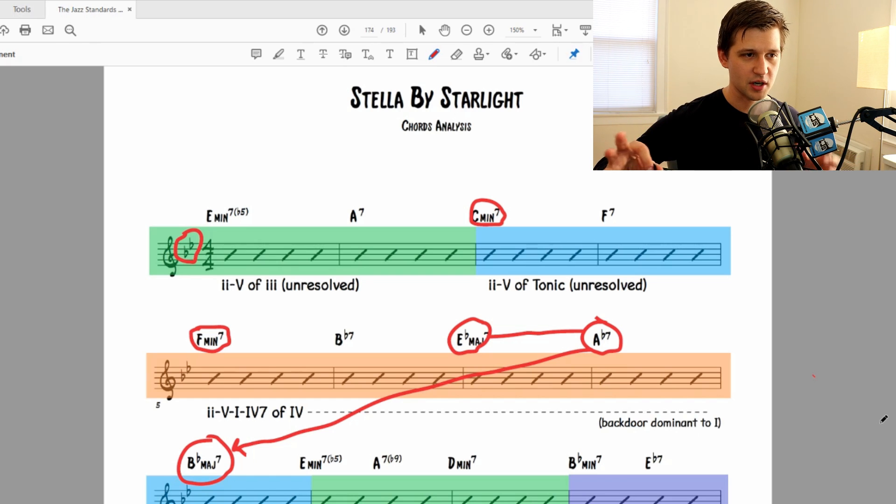So we call it a backdoor dominant. So it resolves from A flat 7 to B flat major 7. Alright, you track with me so far? This is a confusing song, but if we start breaking it down and looking at it this way, it starts to make a little more sense. So we approach the 4 chord, which is E flat major. And then we had that A flat 7, which is the backdoor dominant, resolving to the B flat major 7, the tonic, the parent key center.